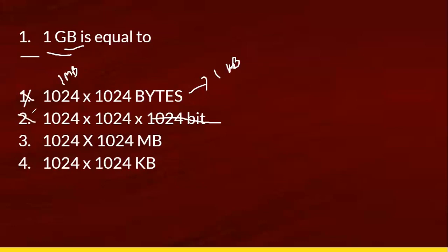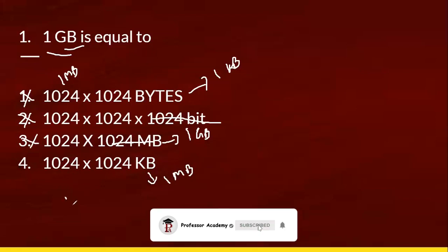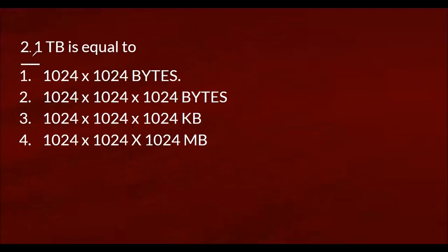First option, second option: 1024 MB is equal to 1 GB. Here it comes — 1024 KB is equal to 1 MB. 1 MB into 1024 equals 1 GB. So option 4, and the pattern is equal to 1 GB.